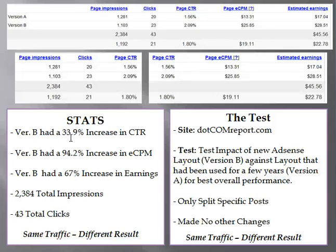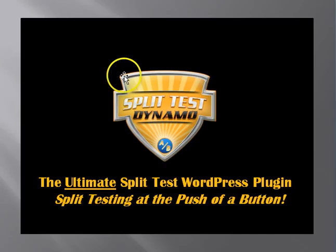All we did was click one button and then set the two templates. We didn't mess with any code whatsoever. That's the power of split testing — turning a losing campaign into a winning campaign. Imagine if you had a 67% increase in ad earnings on some of your sites. Split Test Dynamo is the ultimate split test WordPress plugin. You can split test with no code required and it's as easy as pushing a button. Feel free to check out the additional videos or visit us at splittestdynamo.com.